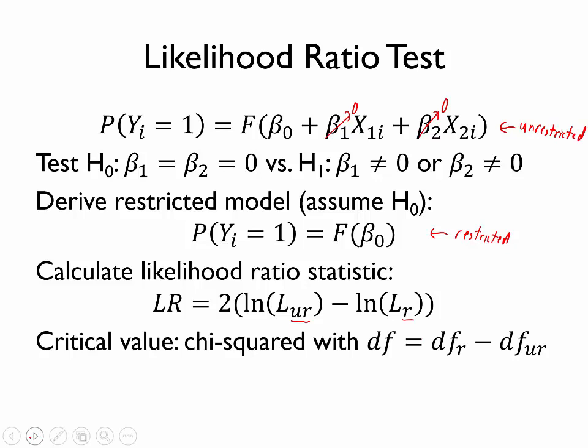Once we have the likelihood ratio statistic, we compare it to a critical value from the chi-squared distribution. We will need degrees of freedom for that chi-squared statistic, calculated as the difference in degrees of freedom between the restricted and unrestricted model — typically the number of parameters eliminated from the model to get the restricted model. If the likelihood ratio statistic is greater than the chi-squared critical value, we reject the null hypothesis; otherwise, we fail to reject. Note that the likelihood ratio statistic and the chi-squared critical values are all positive, so we don't have to worry about positive versus negative values.